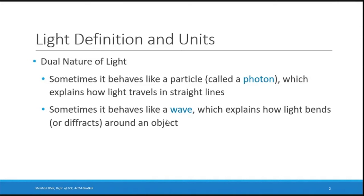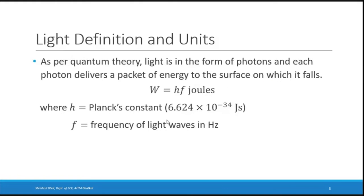When light behaves like a particle it explains how it travels in straight lines, and when it behaves like a wave it explains properties like diffraction — how light bends around an object. As per quantum theory, light is in the form of photons, each delivering a packet of energy equal to h × f, where h is Planck's constant (6.624 × 10⁻³⁴) and f is the frequency in hertz.